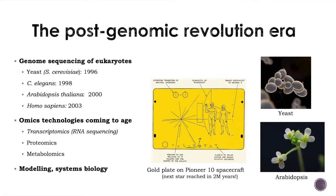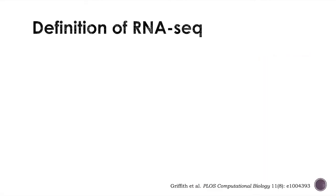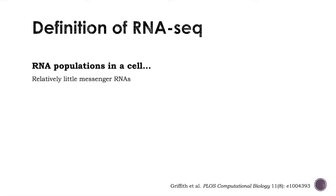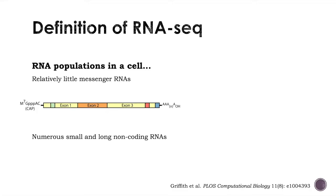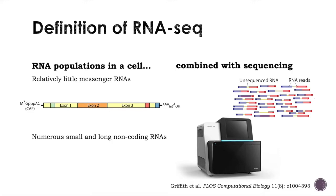Our interest is focused on RNA sequencing. We can give a quick definition in a two-fold way. First, RNA sequencing focuses on RNA in a cell. We mainly think of RNA as messenger RNA, but in fact there is relatively little messenger RNA in a cell, and there is a huge diversity of RNA present in any given eukaryotic cell. Secondly, this RNA has to be sequenced.